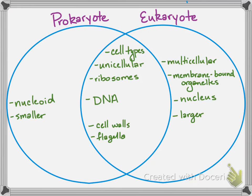You'll see flagella in both cell types, used for movement. You'll also see in prokaryotes extensions of the cell membrane called pili, which they use to stick and adhere to things. In eukaryotes, you'll see extensions that are cytoskeleton-based called cilia — little hair-like projections that can be used to move things outside the cell or to move the cell through its environment.